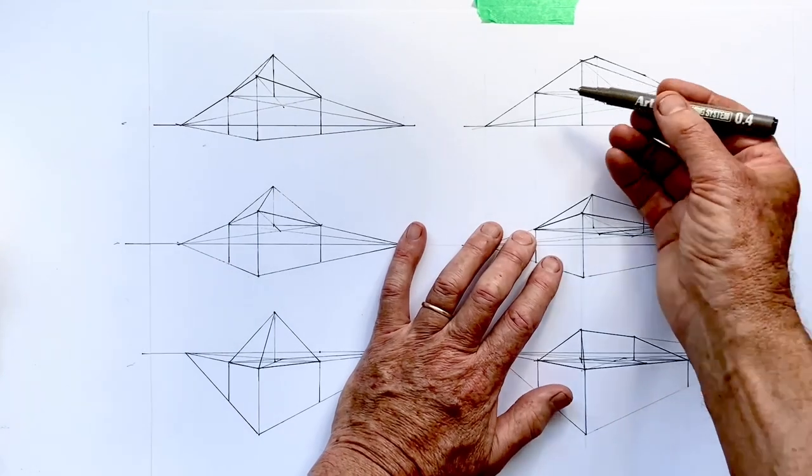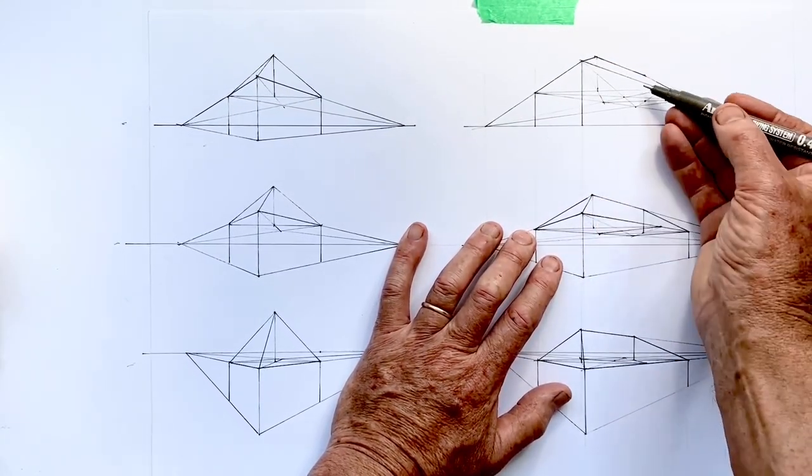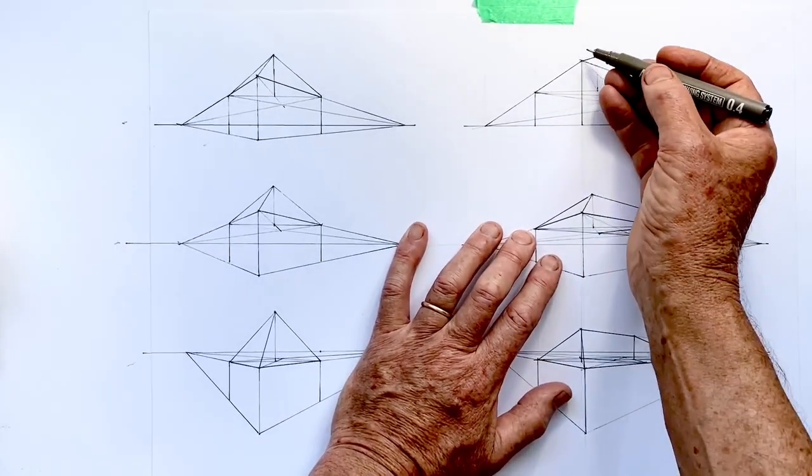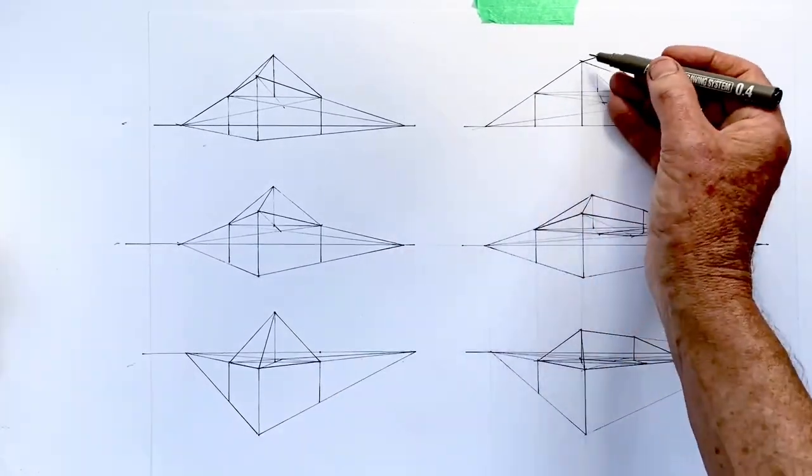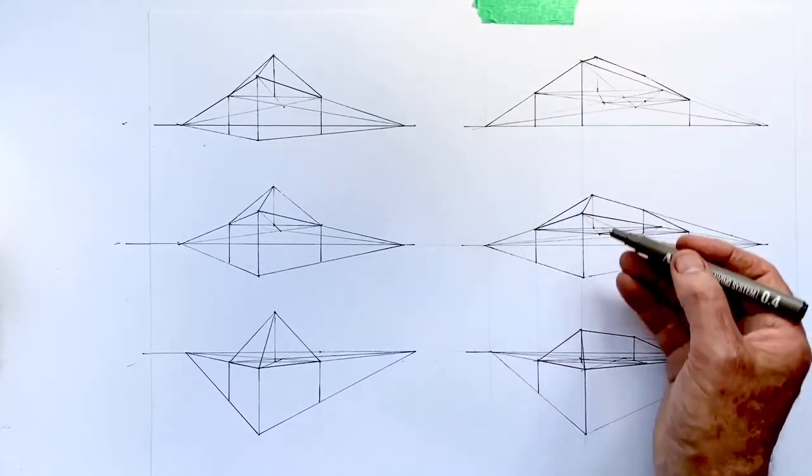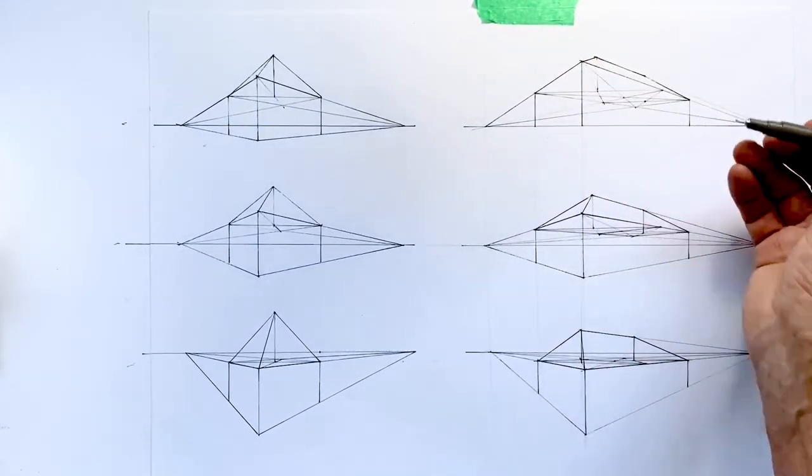So to do that, when we draw the roof, we start by extending these lines out for whatever distance we want the eaves to extend past the wall. And then we connect those to the perspective angles. And then that becomes the corner of the rectangle that we use, then with the diagonals and so forth.